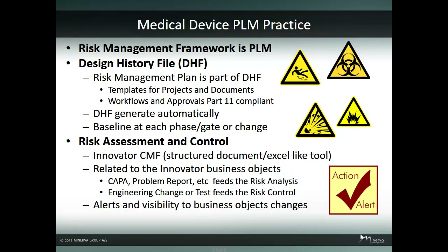Baselines and complete DHF structures are created as a result of any change to a project or deliverable, as well as completion of a phase gate. The risk assessment and control is presented in a unified view. It utilizes the content modeling framework in an Excel-like format to relate the hazards, harms, and their risk to the risk control. The key differentiator from an Excel spreadsheet is that the risk assessment is a structured document with a relationship to Innovator business objects.